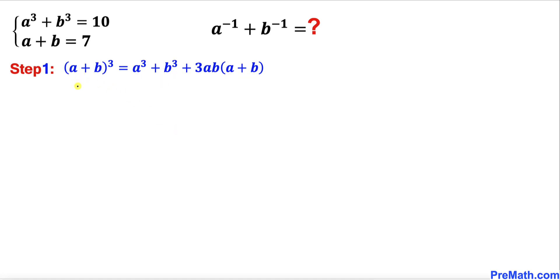So therefore this could be written as 7³ = a³ + b³ + 3ab(a + b), which is 10 + 3ab(7). Now we can see 7³ is the same as 343 = 10 + 3 × 7 is 21 times ab.